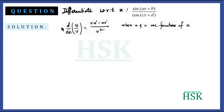This can be remembered easily: d/dx of (numerator upon denominator) equals denominator times differentiation of numerator, minus numerator times differentiation of denominator, upon square of the denominator.